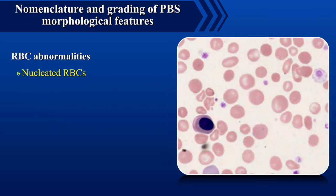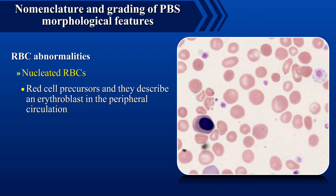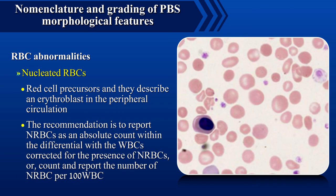Nucleated red blood cells are red cell precursors and describe an erythroblast in peripheral circulation. The recommendation is to report NRBCs as an absolute count within the differential, with the WBC count corrected for the presence of NRBCs.